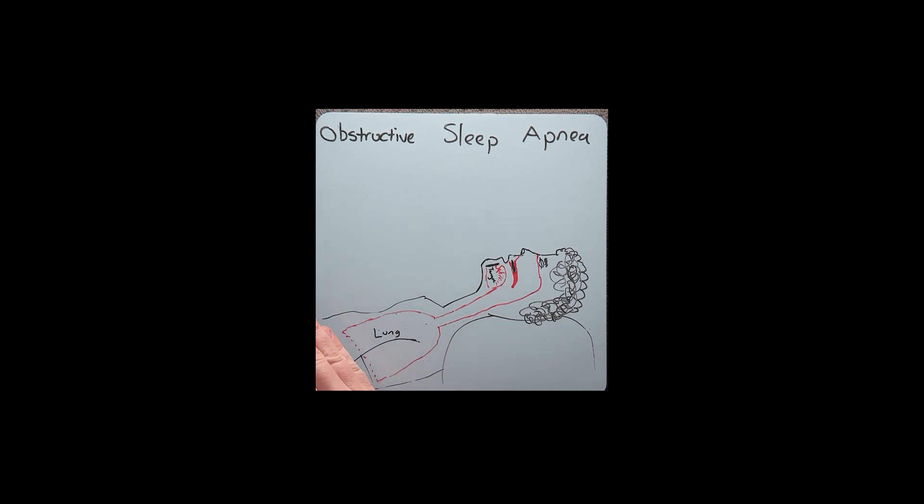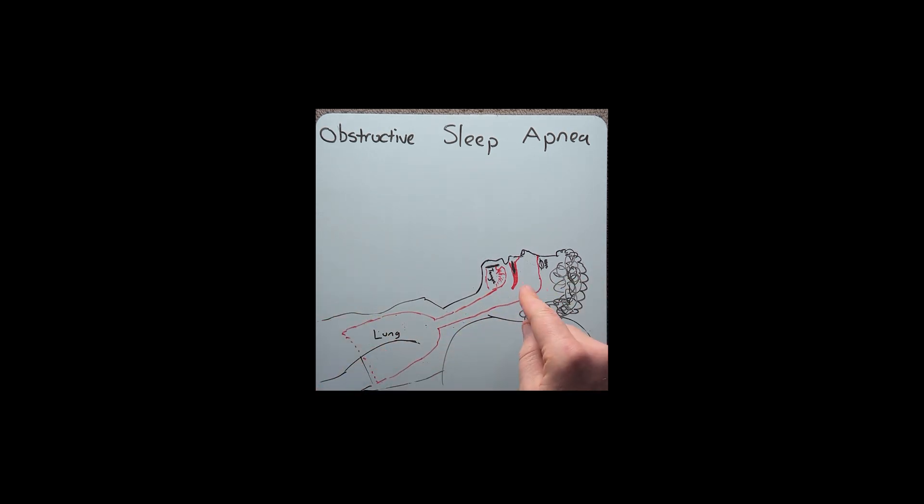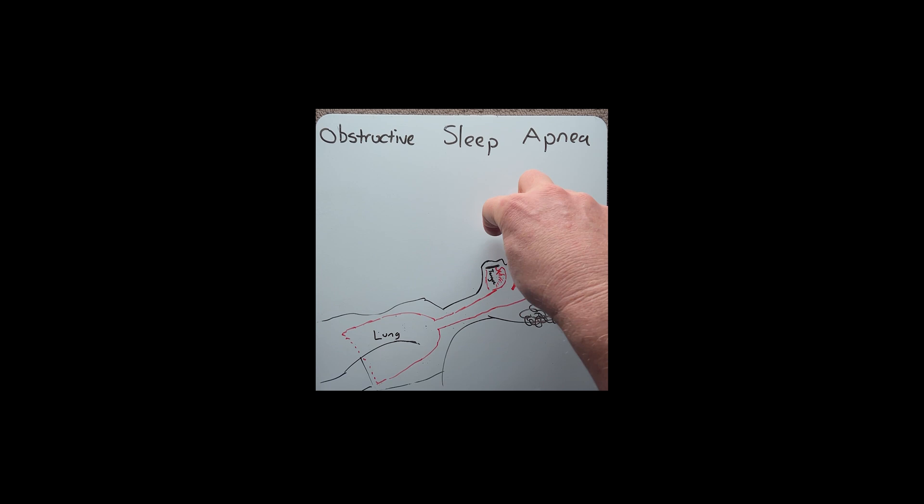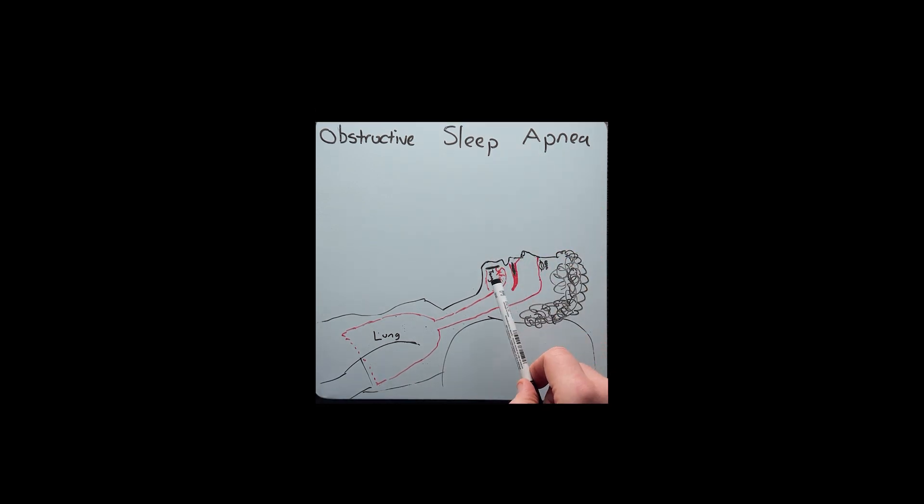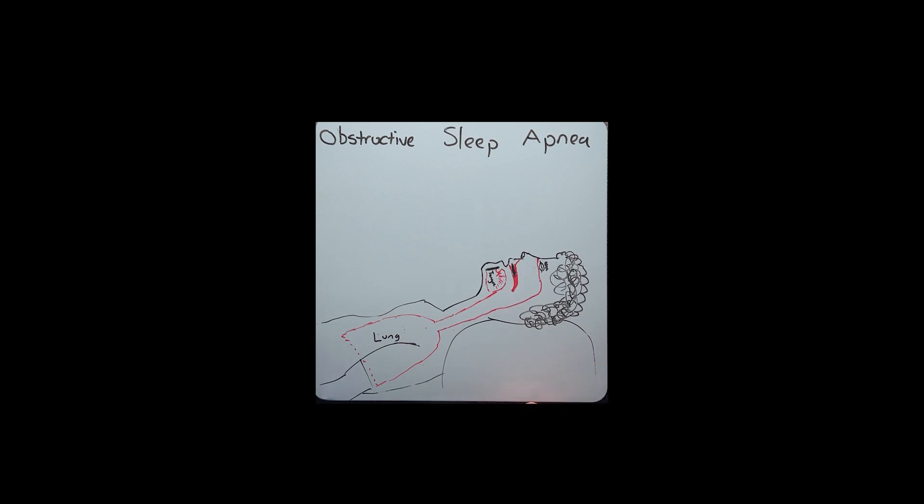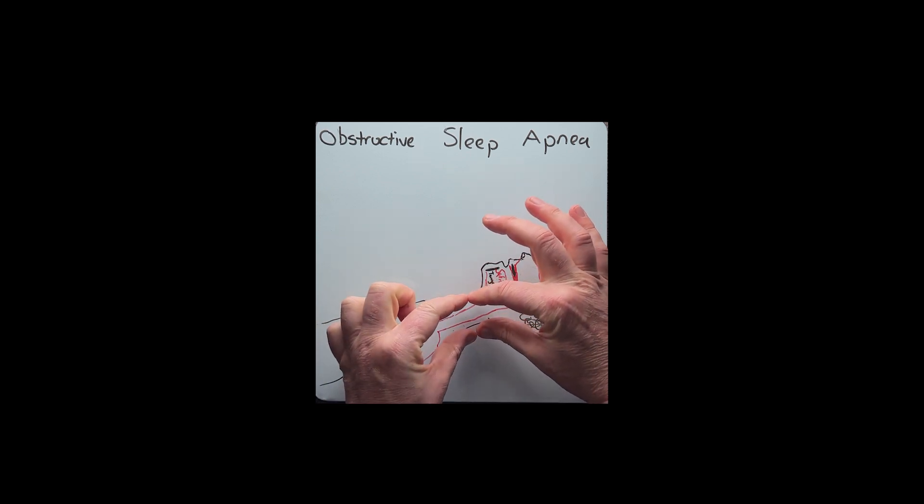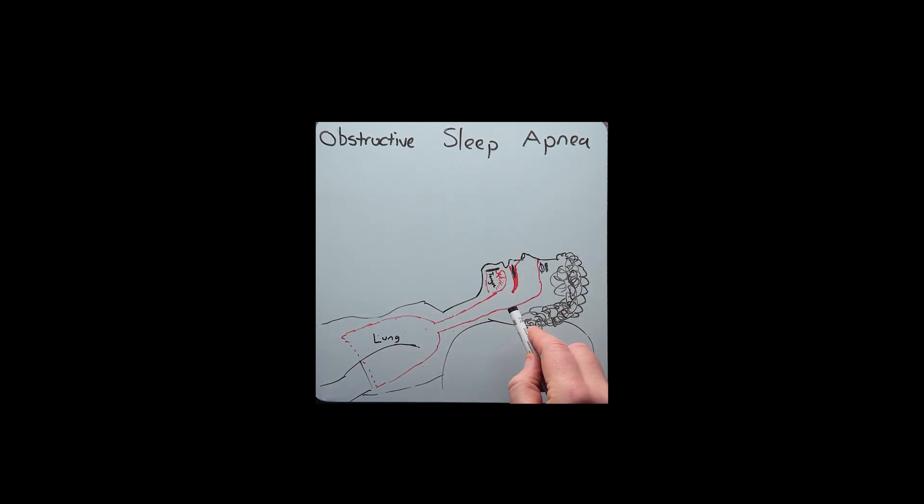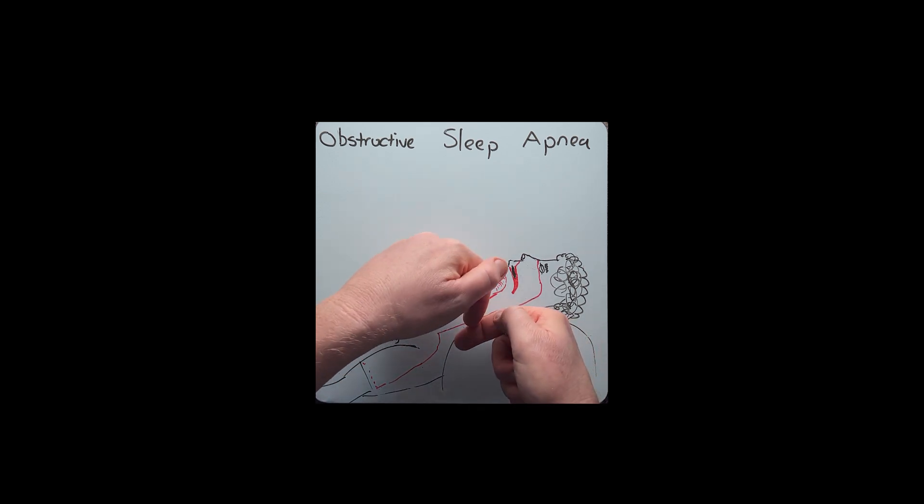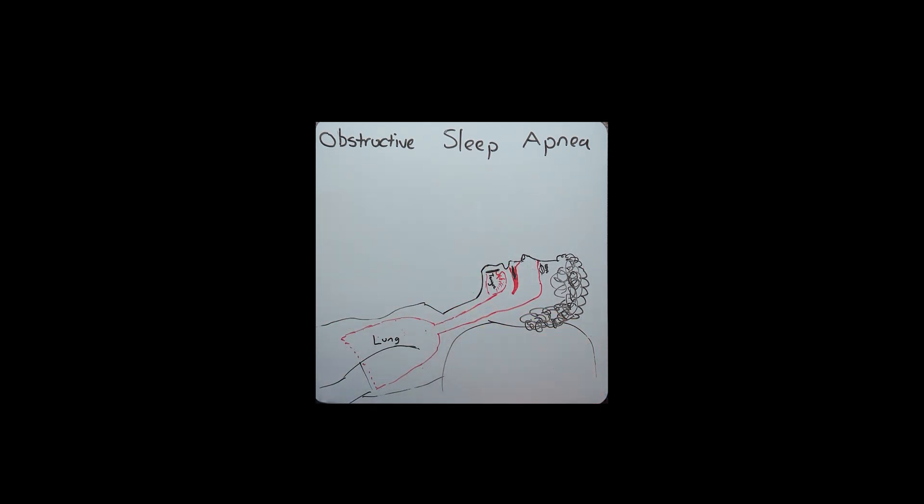It does this by contracting your diaphragm, which generates a negative pressure in the airway. This negative pressure allows air to be sucked into your nose and mouth. During this negative pressure period, your airway will actually start to narrow, and it's the muscles in your pharynx that fight that negative pressure to keep your airways open to allow you to keep breathing.